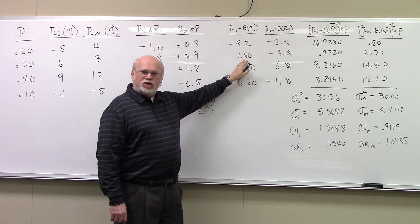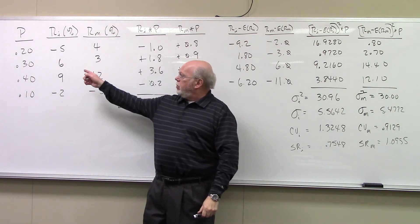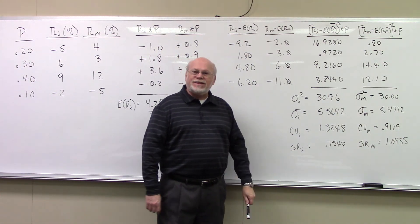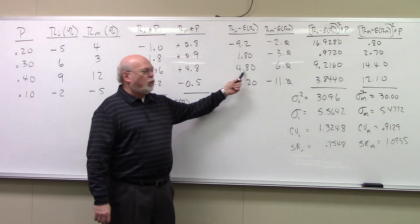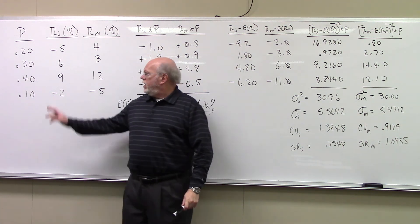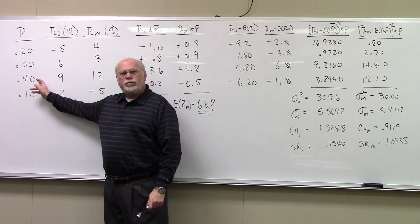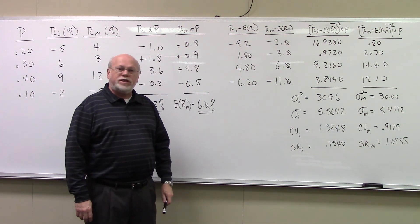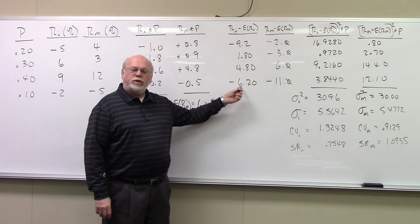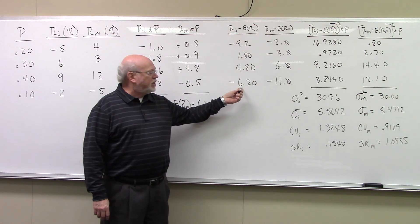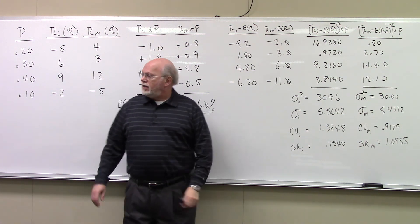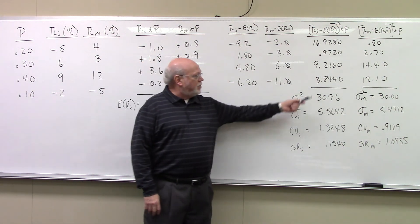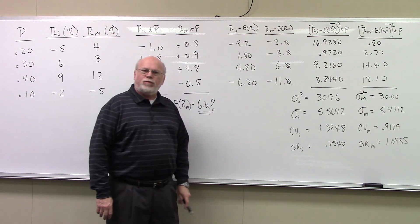1.8 squared times its probability of occurrence, which is 0.3, gives 0.9720. 4.8 squared times its probability of occurrence, which is 0.4, gives 9.2160. And lastly for the security, negative 6.2 squared times its probability of occurrence, which is 0.1, gives 3.8440.